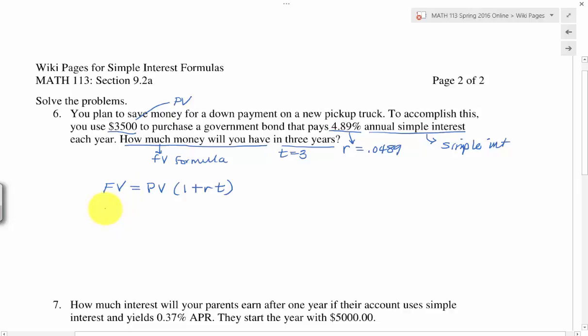The next thing I want to see is the formula with all of your values plugged in. And so that'll be $3,500 times one plus my R is 0.0489, and my T is three. This is the second thing that I'm looking for, which is that formula that you chose with all the values plugged into the correct places.